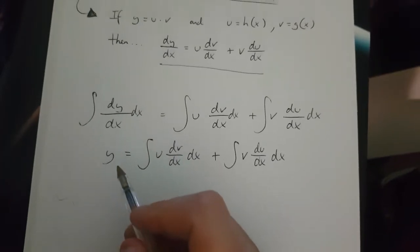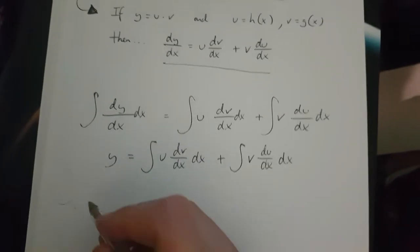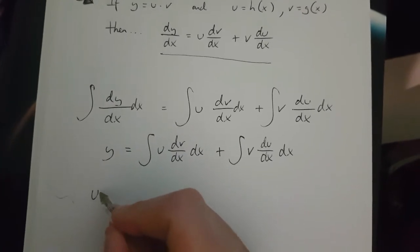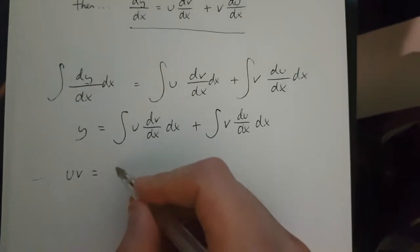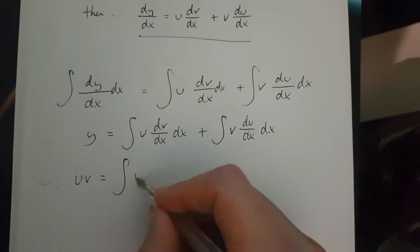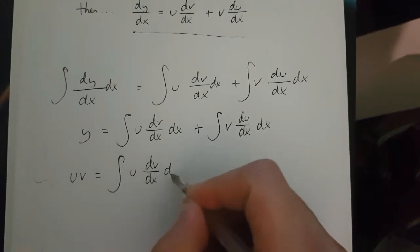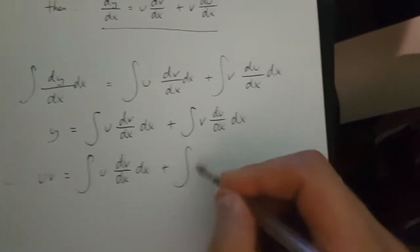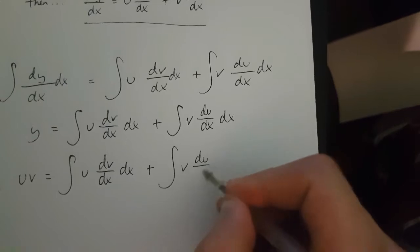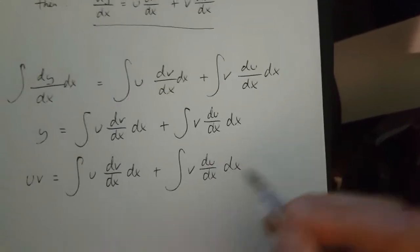Now, since y is uv, what we really have is uv equals integrate u dv over dx plus integrate v du over dx.